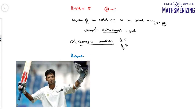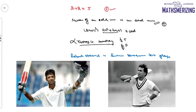Consider another statement: 'Rahul Dravid is India's best ever test player.' This statement is true for some but may not be true for someone who is a Sunil Gavaskar fan or a fan of other cricketers. So this again is not a mathematical statement. Any statement which can be answered with a definite true or a definite false is a mathematically acceptable statement; otherwise it is not.